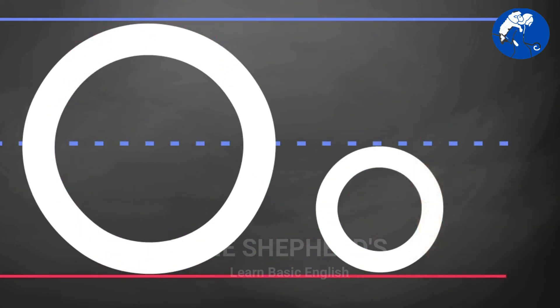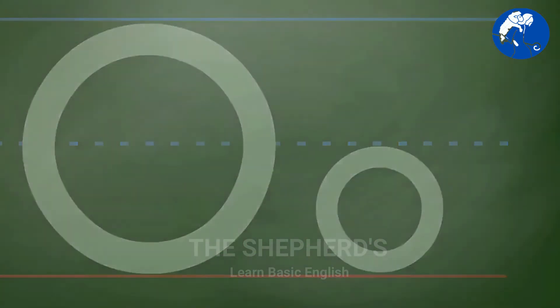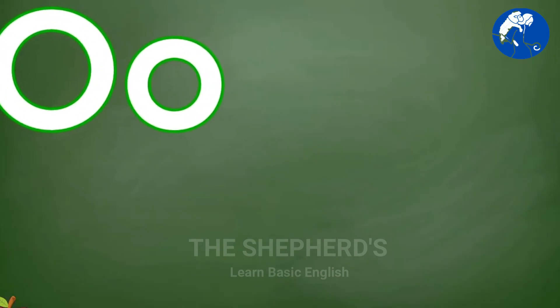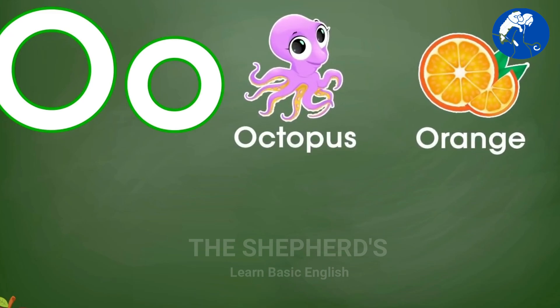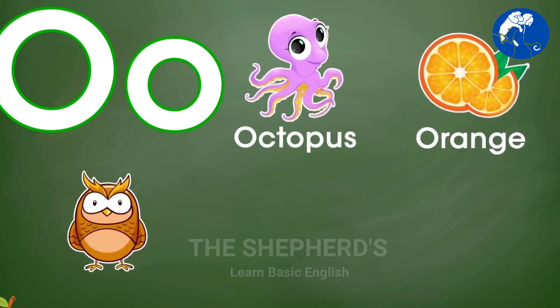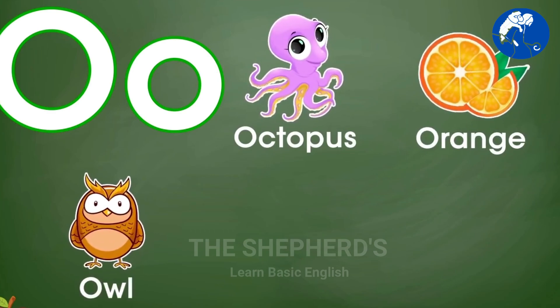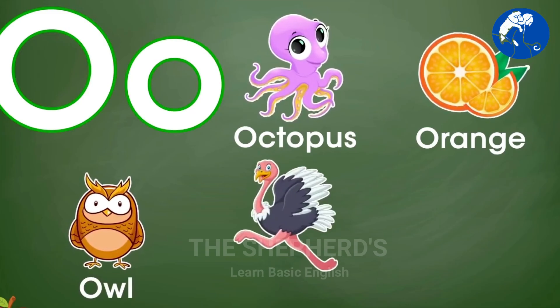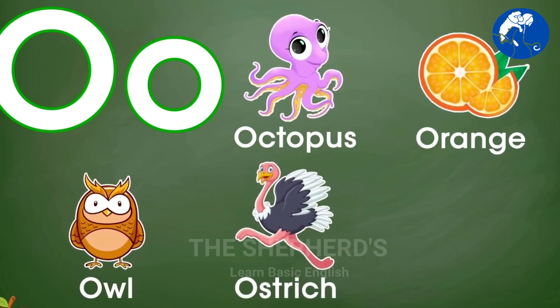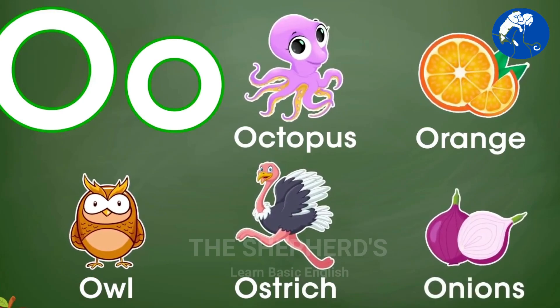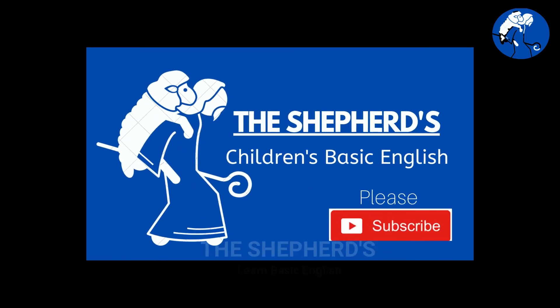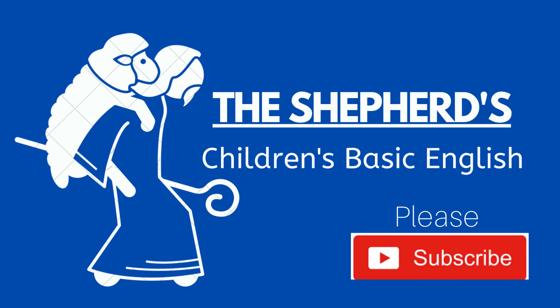Looking good! O is for Octopus, Orange, Owl, Ostrich, Onion. Thank you!